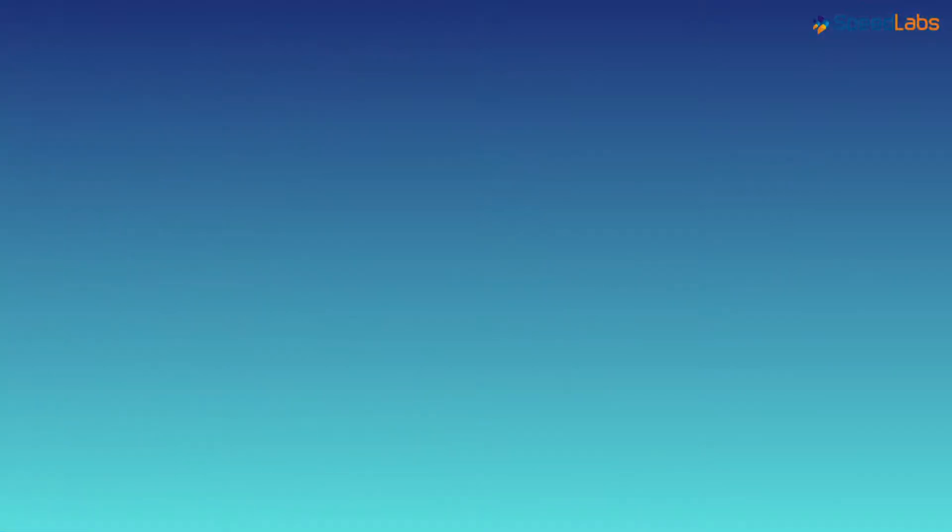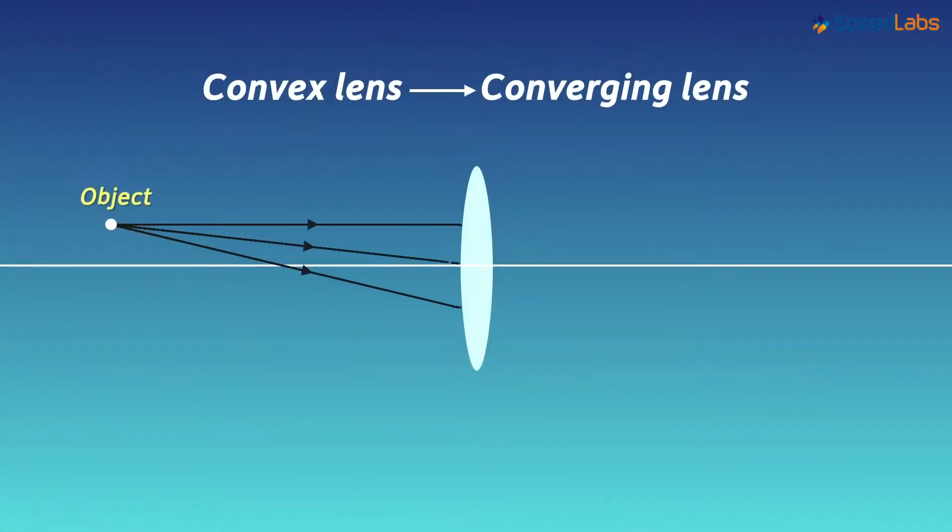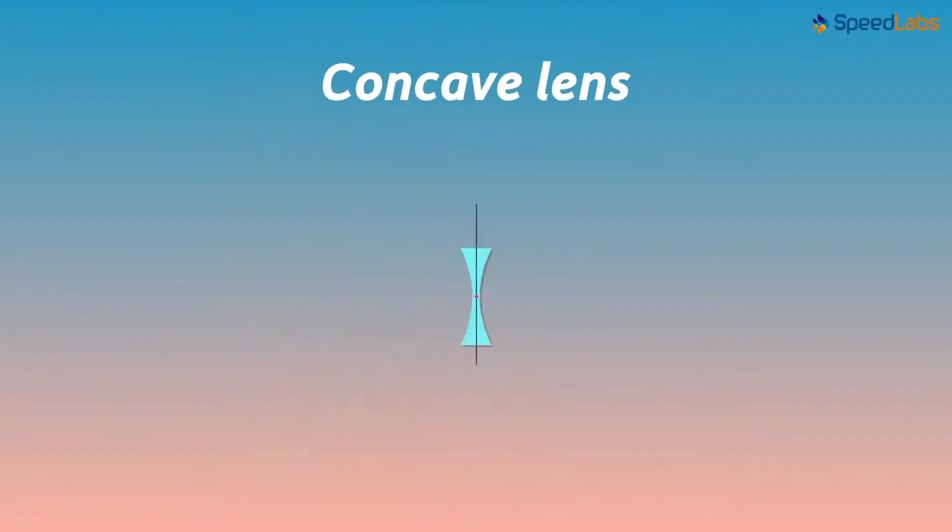In the previous part of this lesson, we've seen why a convex lens is called a converging lens. Now let's discuss the concave lens in detail.